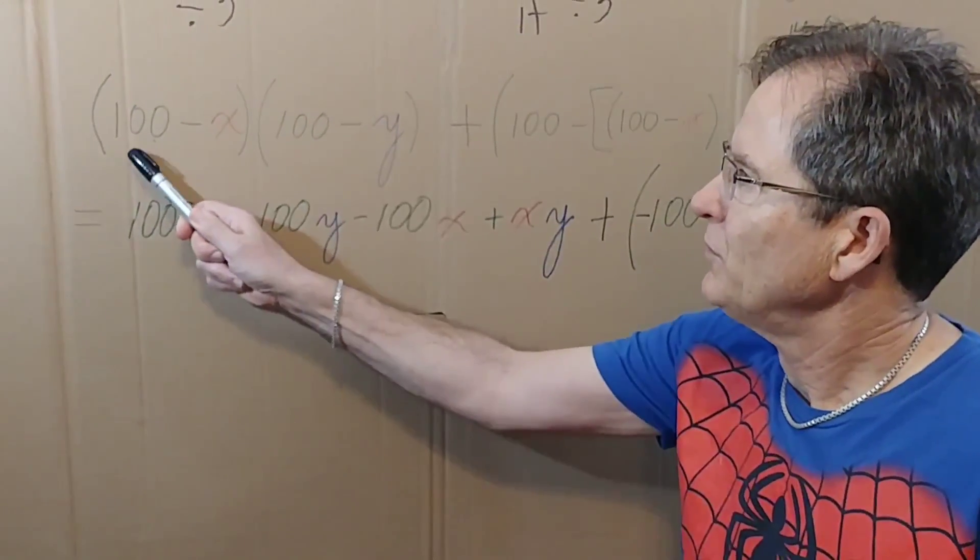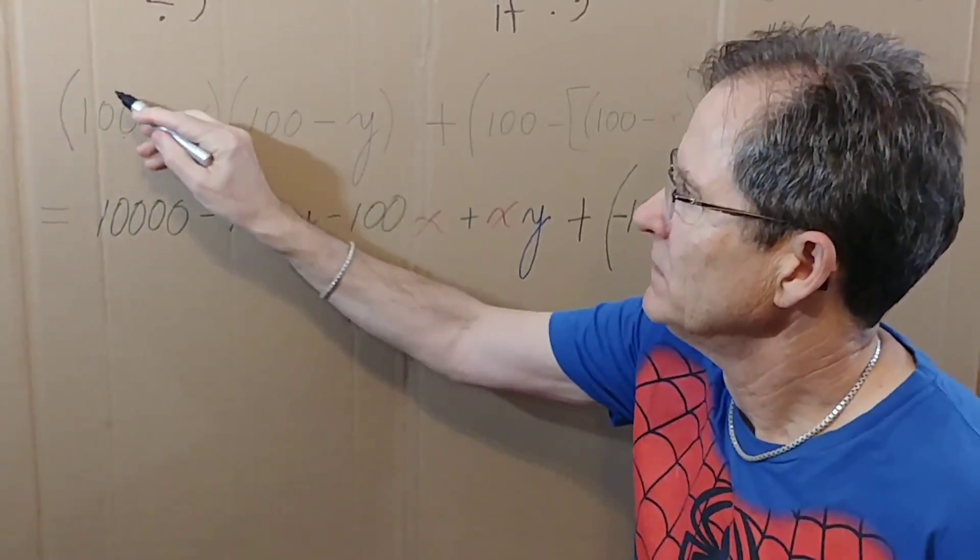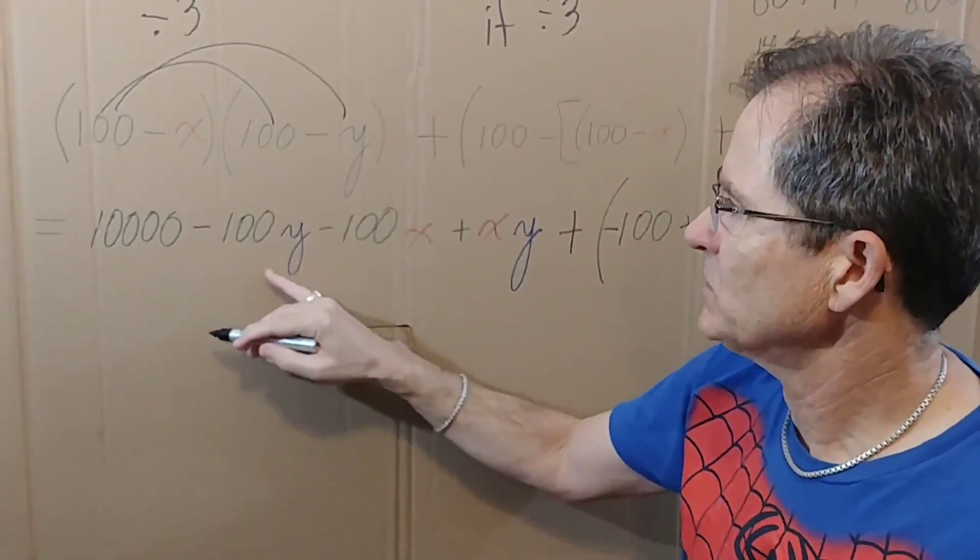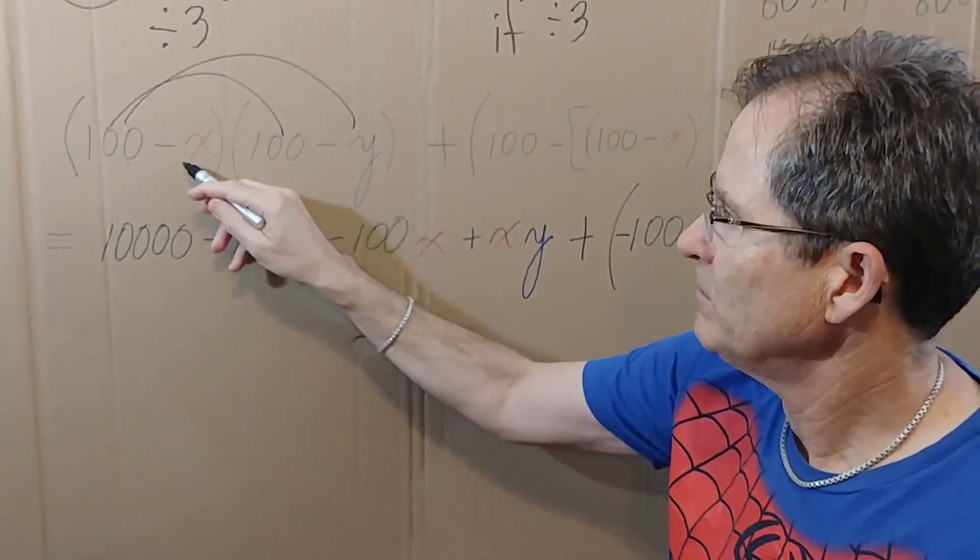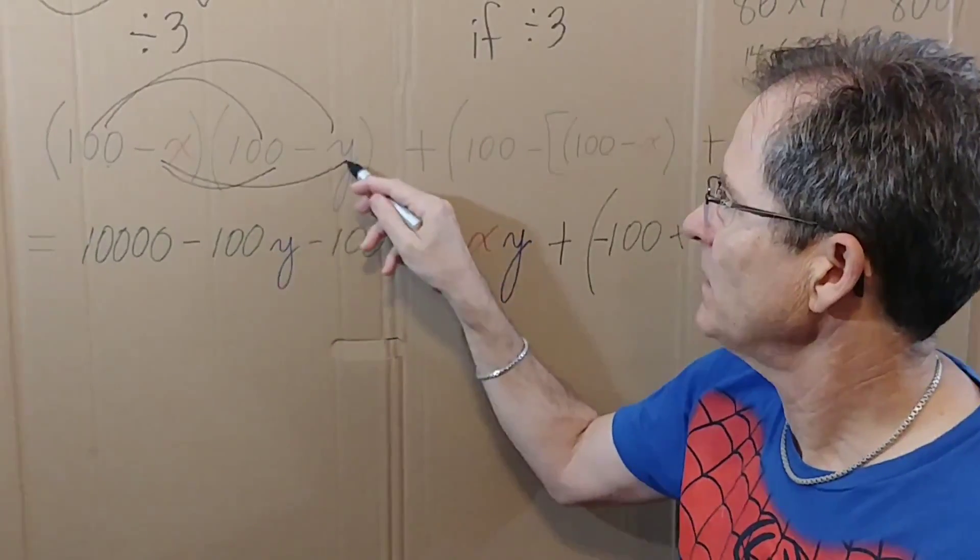You should have gotten, if you foil this out or multiply it out, you get 100 times 100 which is 10,000, 100 times minus y is negative 100y, minus x times 100 is minus 100x, and minus x times minus y plus xy.